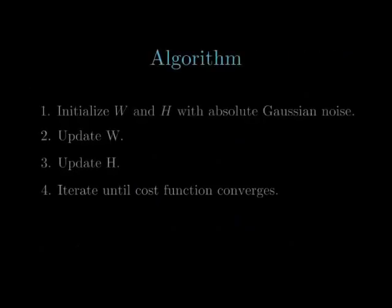For our algorithm, we initialize W and H with the absolute value of Gaussian noise. Then, we update W. Subsequently, we update H. We keep iterating until the cost function converges.